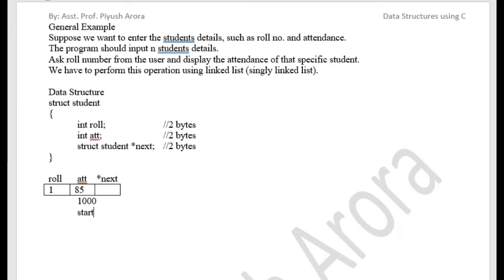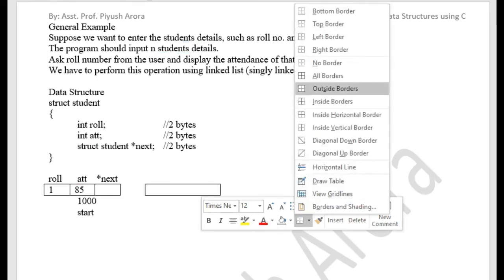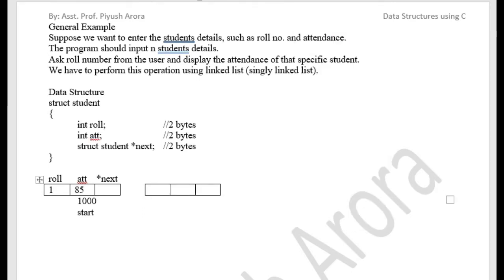Then when you create the next node for the next student's details, you have to create a second node. First, you create a node — whenever a node is created, it has some address, for example 2050. It can have any address, and its name is temp. You can use any pointer variable — start, temp. These are all pointer variables.